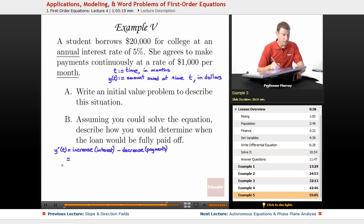So the interest that she pays is dependent on the amount that she owes at any given time. So the amount that she owes at any given time is y of t. And then it says that she's borrowing at an interest rate of 5%.